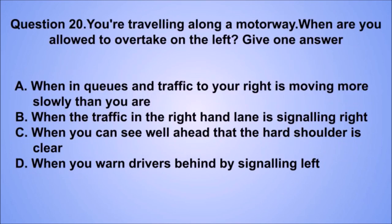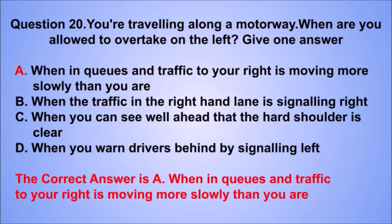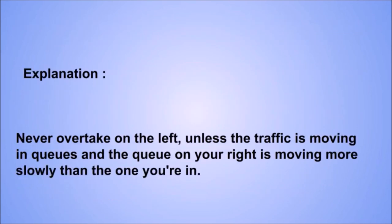Question 20. You're traveling along a motorway. When are you allowed to overtake on the left? The correct answer is A: When in queues and traffic to your right is moving more slowly than you are. Never overtake on the left unless traffic is moving in queues and the queue on your right is moving more slowly than the one you're in.